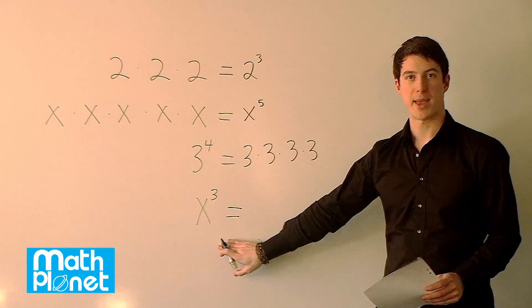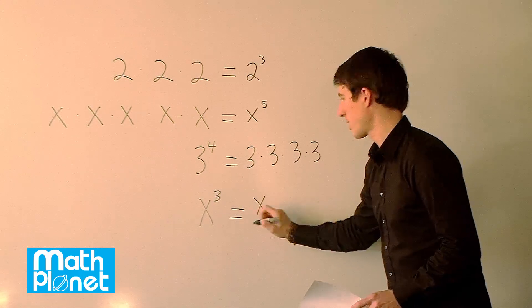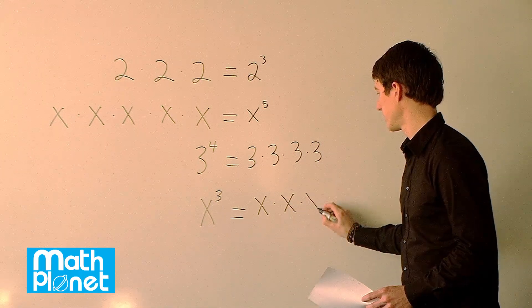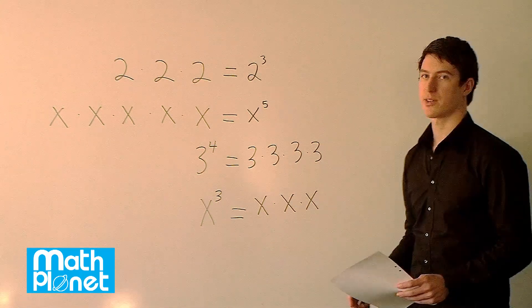And in this case the base is x. So we have x again here and there are 3 of them. So we have x times x times x. And that way we can rewrite these in whatever way we like.